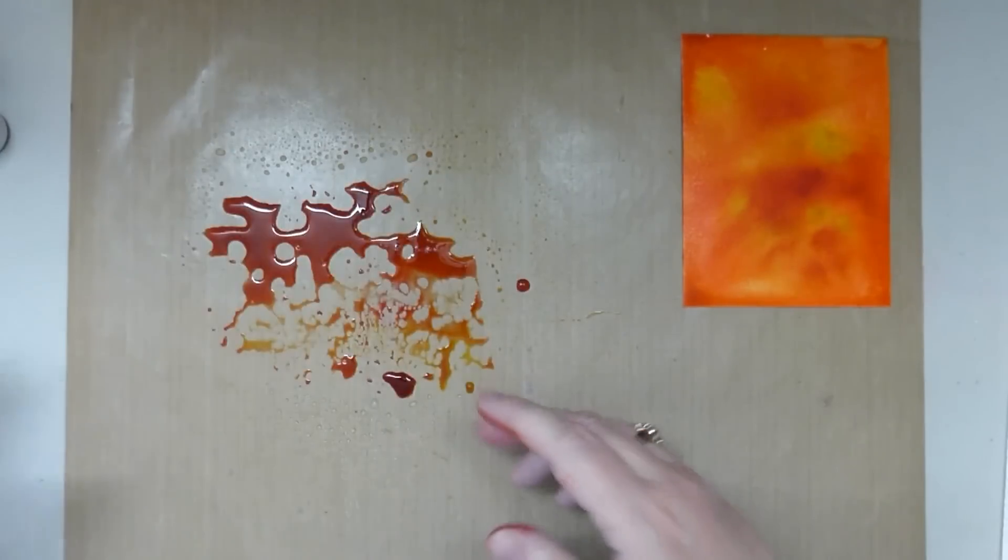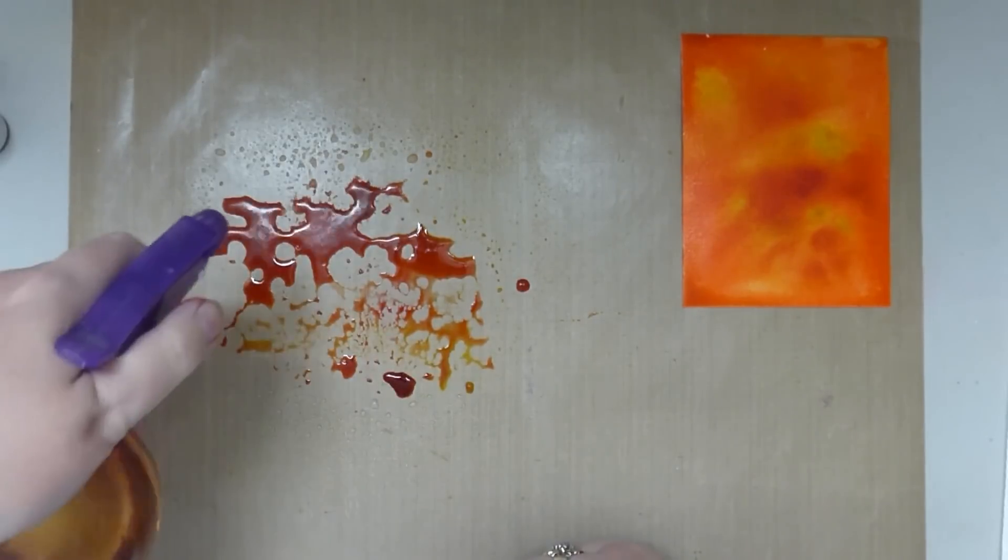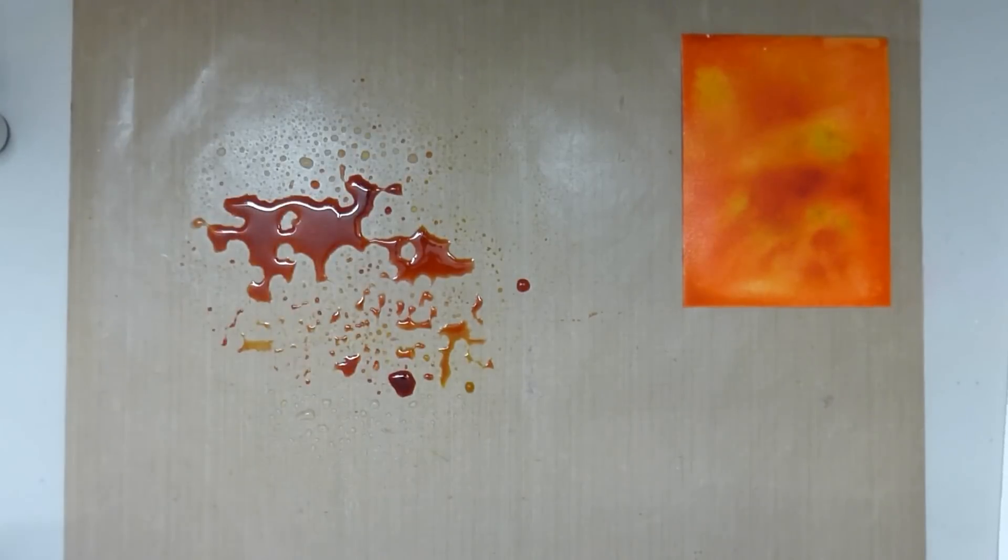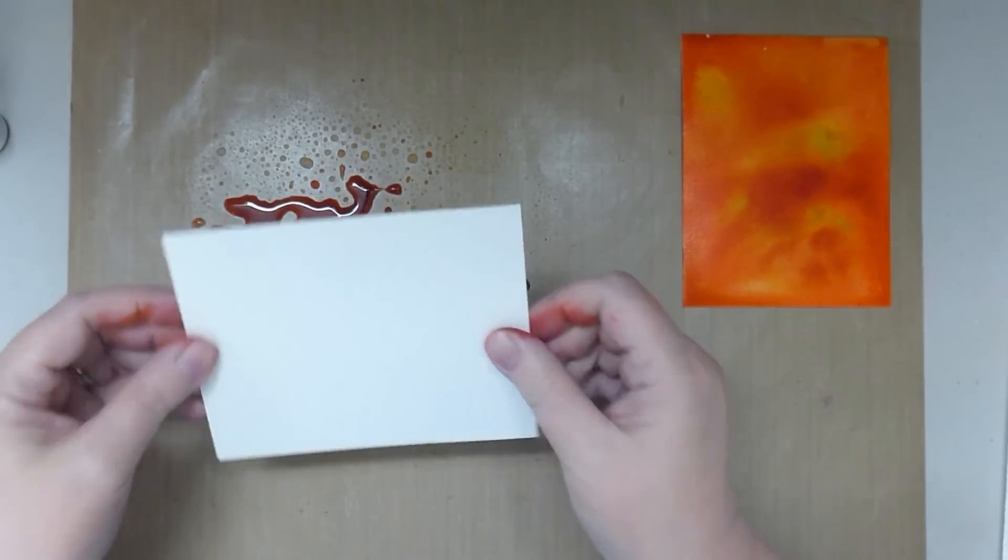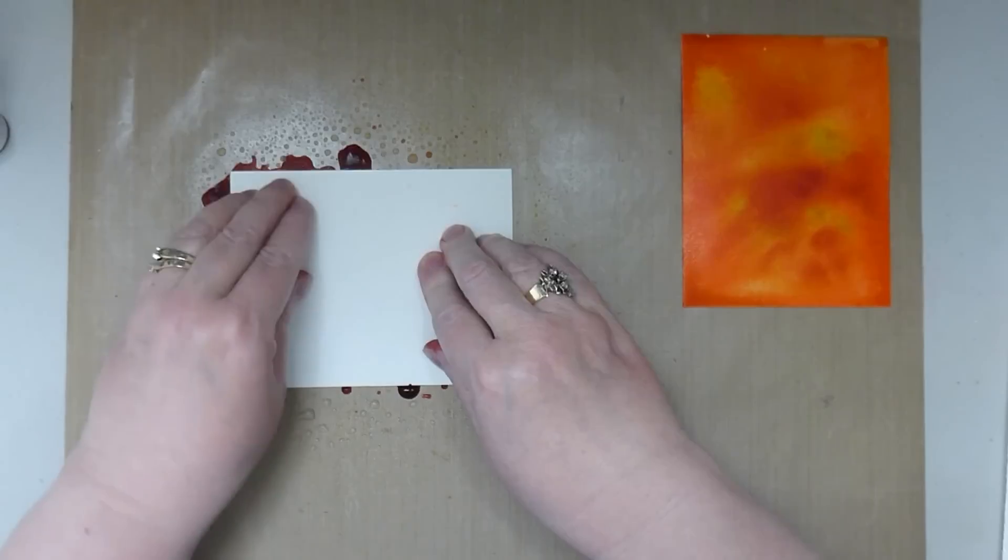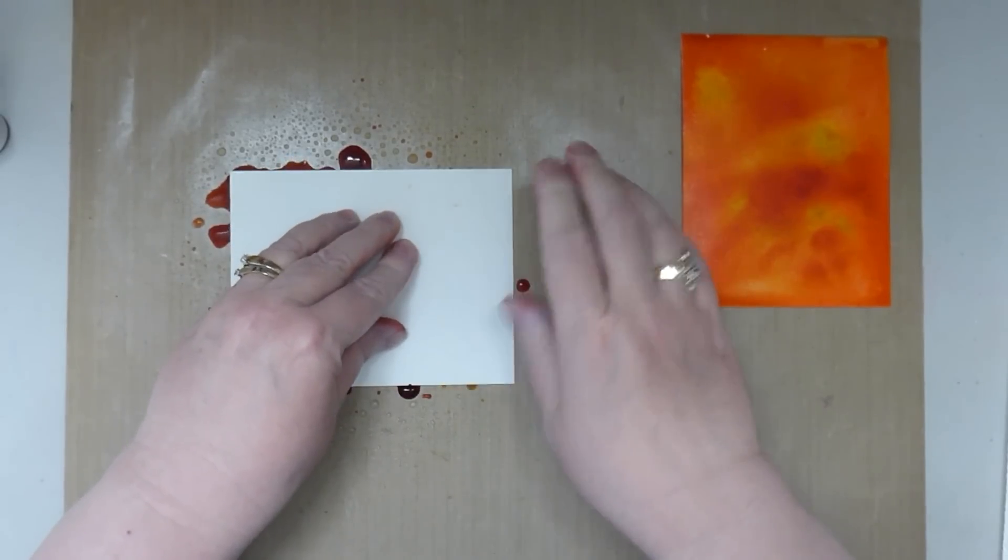Now I have lots of ink left over, so instead of wasting it I would just add some more water. Now with all this water it's going to be a little bit runny, but we're going to drop a second piece in and do the same thing. This time the colors will be diluted so there will be a lighter version of the first one.